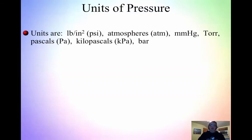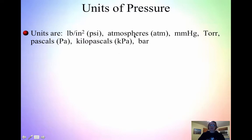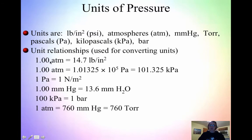With pressure, some other units we can have are PSI (pounds per square inch), atmospheres or ATM, millimeters mercury, torr, inches of mercury, Pascal, kilopascal, and the bar. There are a lot of different units for pressure. Typically we will use ATM, kPa, and torr — those are the big ones, but you do need to know all of these conversions in case you're asked to go between them.